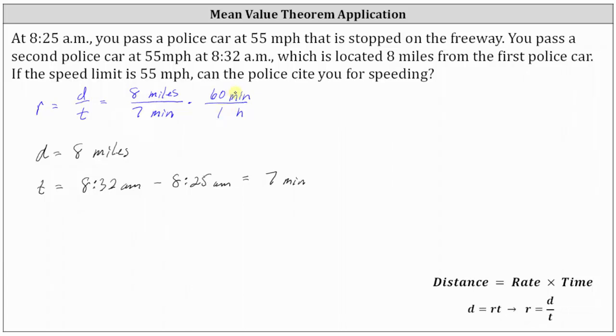But now when multiplying, the units of minutes simplify out, leaving us with miles per hour. So multiplying, we now have eight miles times 60 or 480 miles divided by seven times one hour or seven hours.